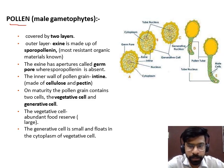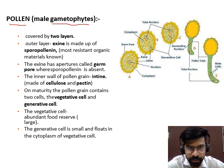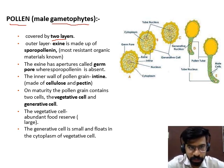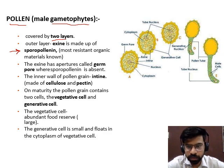Pollen is the male gametophyte. Pollen grain holds male gametes. Pollen grain has two layers, i.e., exine and intine. Exine is the outermost layer, and exine is made up of sporopollenin, which is the most resistant organic material present. This material can withstand high temperature conditions, high acidic and basic conditions.